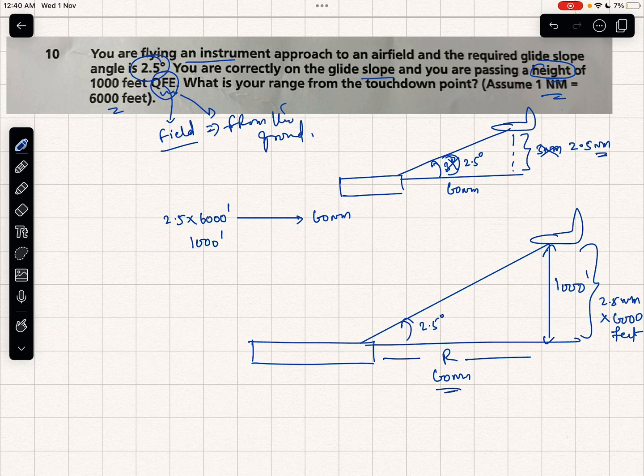So how many nautical miles? 60 by 2.5 into 6000 into 1000. So this many nautical miles is the range of the aircraft. Now simple calculations here.